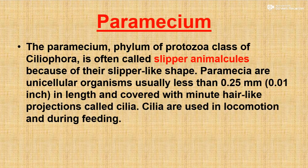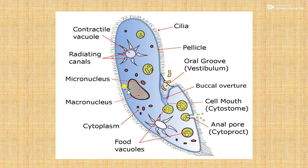This Paramecium is a unicellular organism, made up of a single cell, usually less than 0.25 mm in length and covered with minute hair-like projections. These hair-like projections are called cilia, which act as locomotory organs.